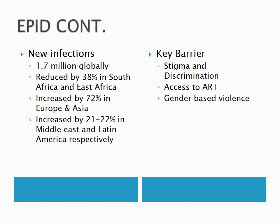Stigma and discrimination is a very key barrier in controlling the spread of HIV. Because of stigma, people do not want to go for testing, fearing that if they test positive, others will run away from them. Or when they know their status, they hide it and go underground, potentially spreading the virus further. Stigma and discrimination is therefore a major barrier in the control of HIV infection.